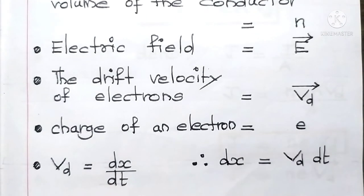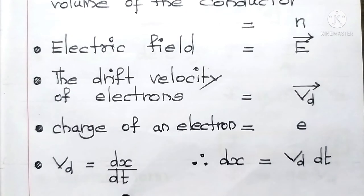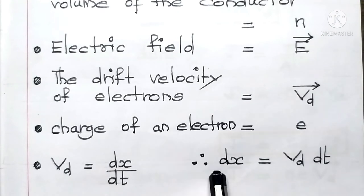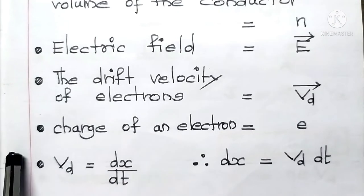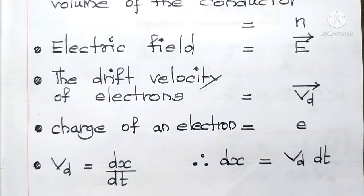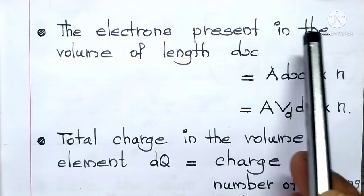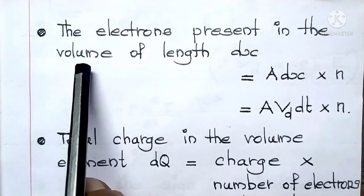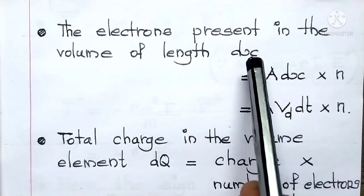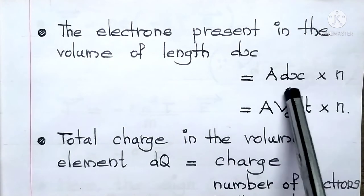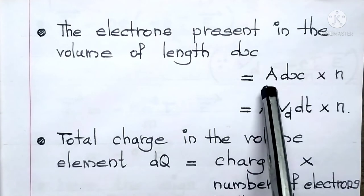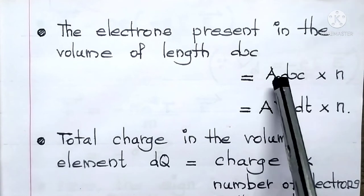Since velocity equals length by time, Vd = dx/dt, and therefore dx = Vd · dt. The number of electrons present in the volume of length dx equals that volume multiplied by the number of electrons per unit volume, n. The volume is written as capital A into dx — that is, area into length.